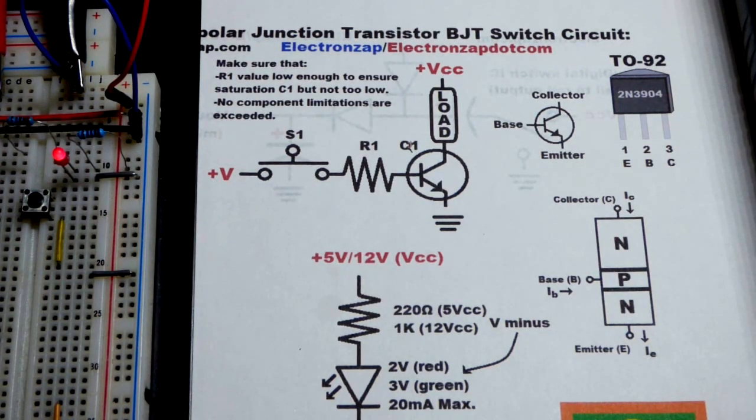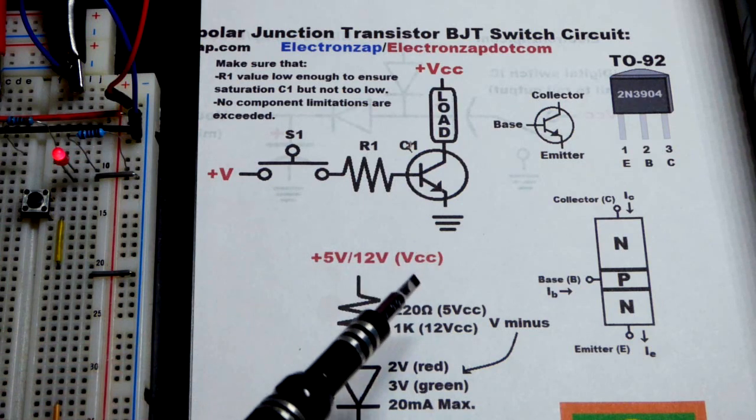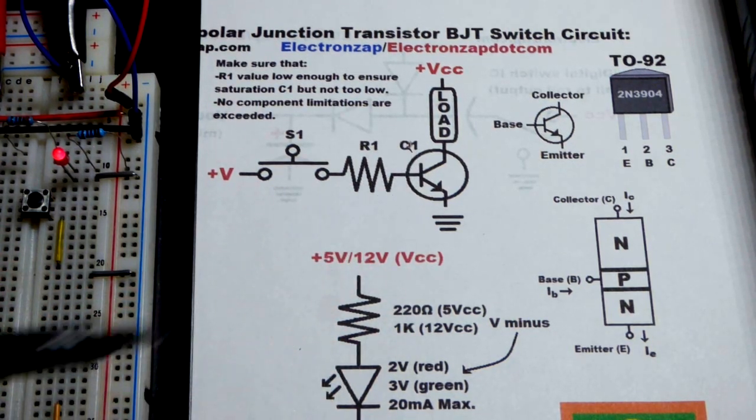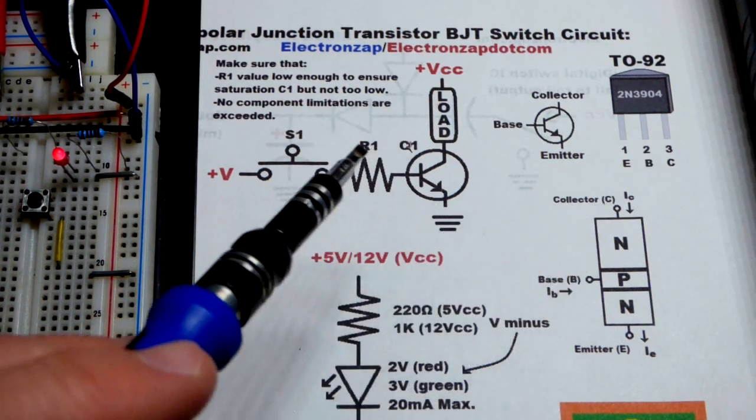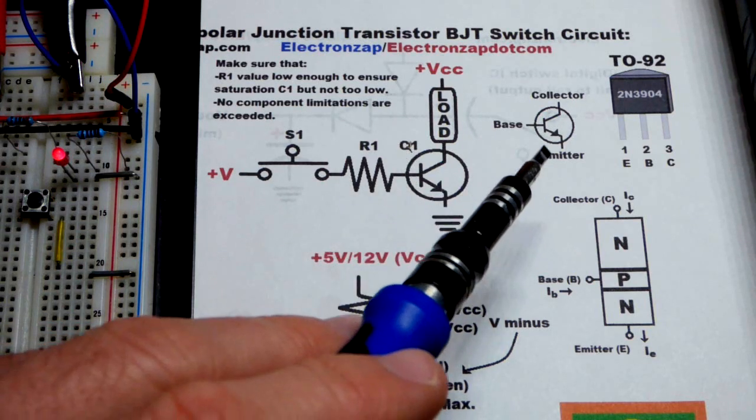So now in this video, we're going to quickly go over using an NPN bipolar junction transistor as a switch. That is Q1 right there. I accidentally wrote C1. I'm reusing an old diagram. It has all of the information on here that you really need to know.